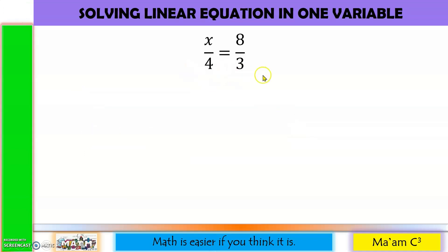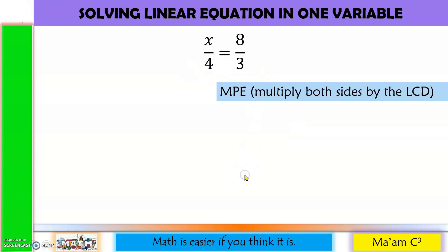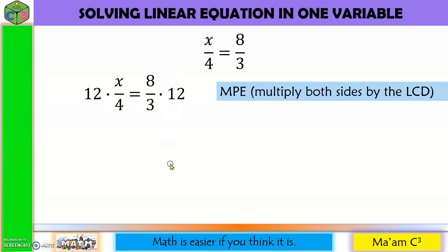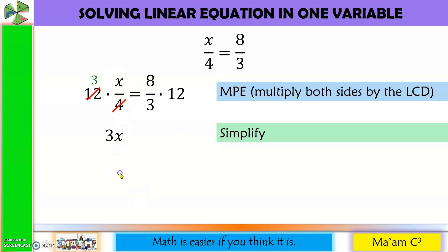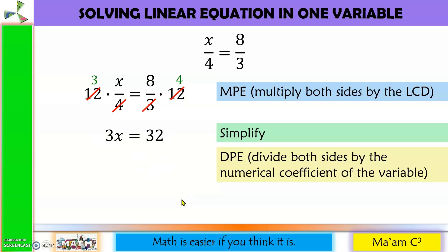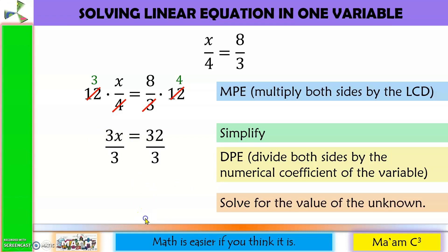Here we have two fractions. We still apply MPE, but this time we use the LCD. The LCD of 4 and 3 is 12, so we multiply both sides by 12. Simplifying: 12 divided by 4 is 3, so we get 3x; 12 divided by 3 is 4, and 8 times 4 is 32. Then applying DPE, we divide both sides by 3: x equals 32 over 3.